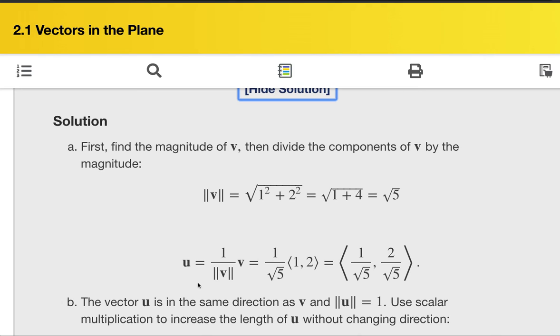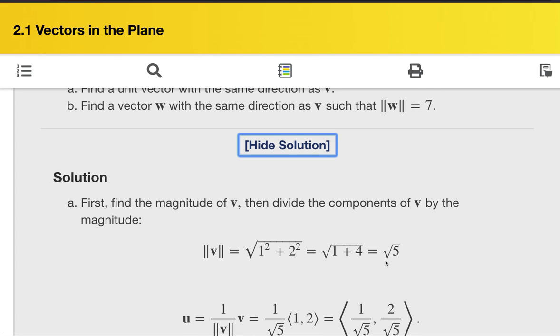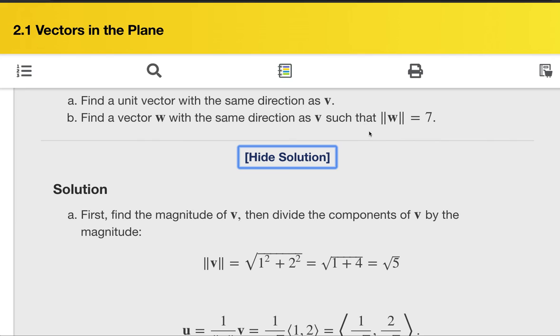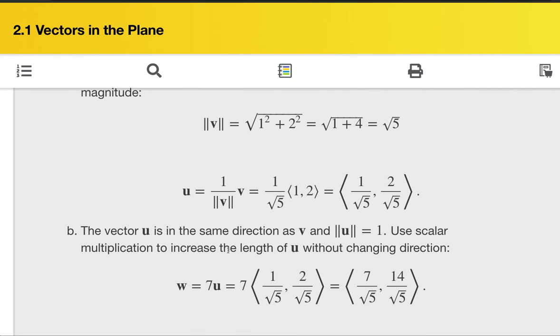Because we know the norm of this vector, a unit vector, it is just 1. And then, you want to find out a new vector w such that the norm is 7. What you need to consider here is simply multiply the unit vector by the scalar quantity 7.